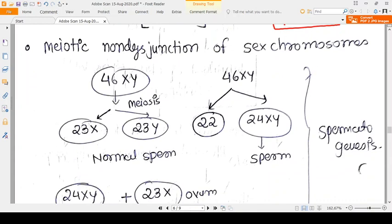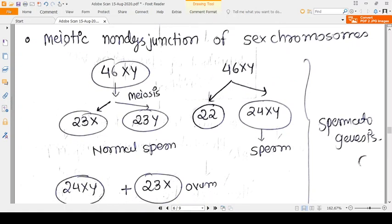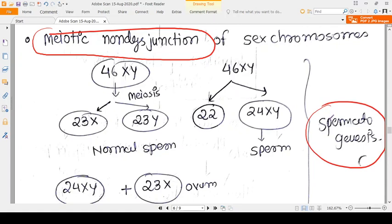It is a meiotic non-disjunction. Whenever gametogenesis is happening, some problem arises. Just like if spermatogenesis is happening, the 46 XY is the basic chromosomes, but when the sperm are formed, each sperm has 23 chromosomes.